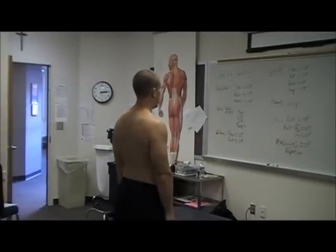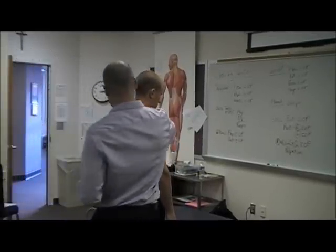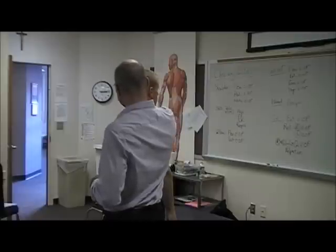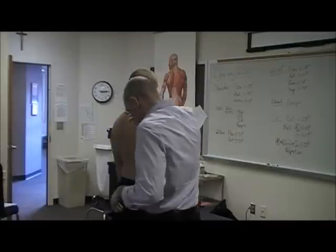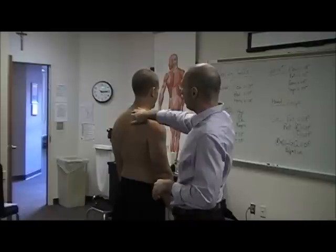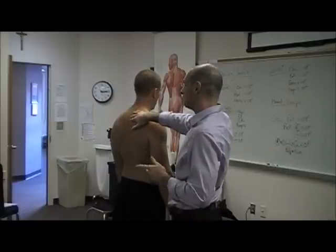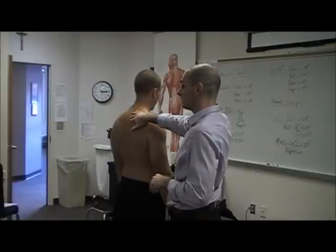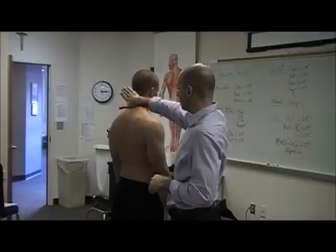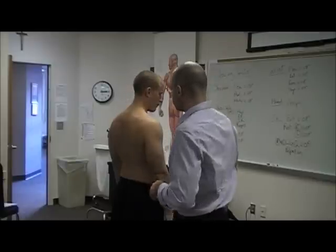You look at all your lumbar stuff like you normally would — scoliosis. You want to look at the thoracic spine, whether they are kyphotic, lordotic, or just flat. You see a lot of people with flat thoracic spines.